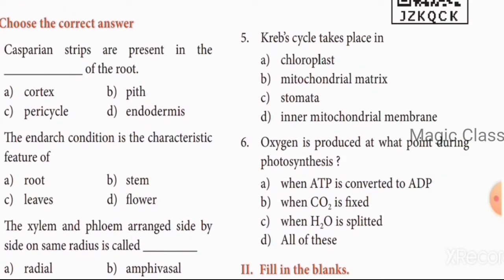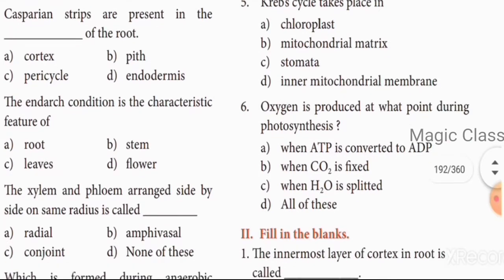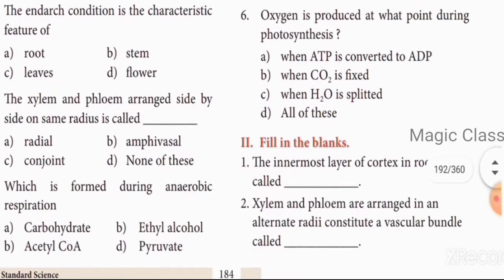Fifth question: Krebs cycle takes place in dash. Answer: Mitochondrial matrix, option B. Sixth question: oxygen is produced at what point during photosynthesis? Oxygen is produced when H2O is split. Option C is the answer.